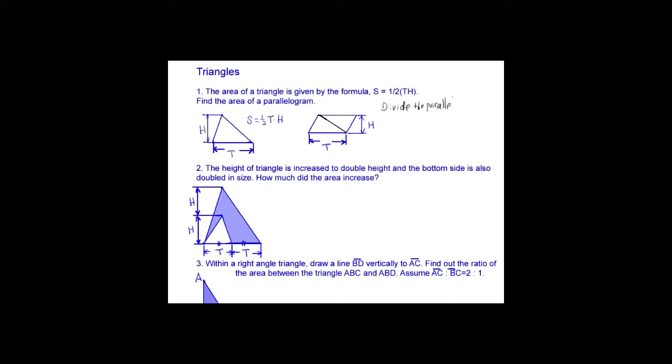Divide the parallelogram. So S equals 2 times 1 over 2 TH is TH. The height of the triangle is increased to double height and the bottom side is also doubled in size. How much did the area increase?